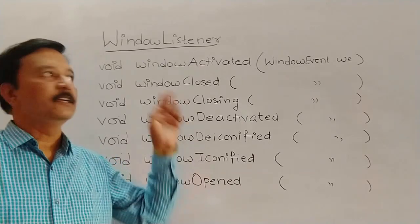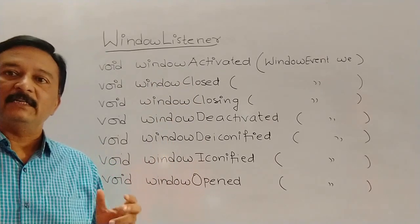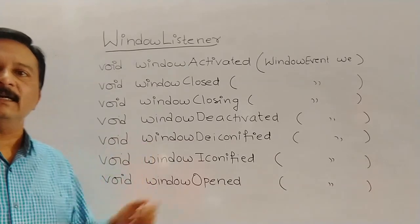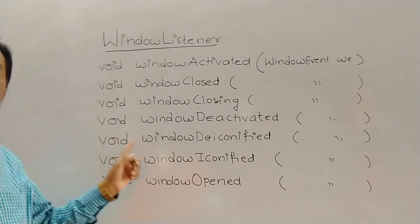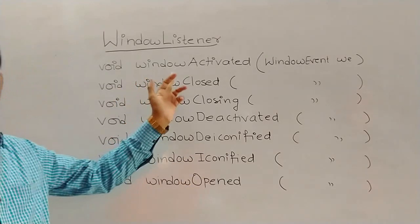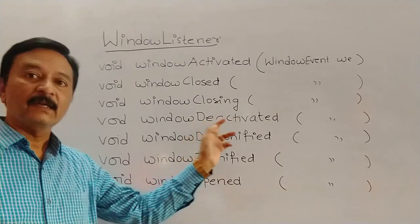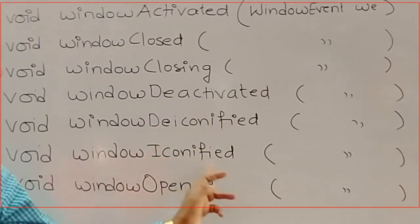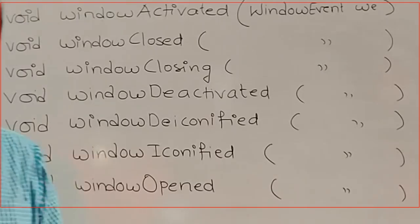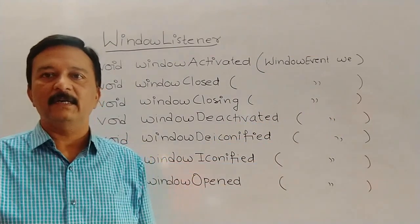The next interface we are going to study is called the WindowListener interface. In Java event handling, this is one of the largest interfaces. It currently has seven different methods. We will study all these methods. The first one is windowActivated, second is windowClosed, third is windowClosing, then windowDeactivated, windowDeiconified, windowIconified, and windowOpened. All these methods take a WindowEvent class object as argument.